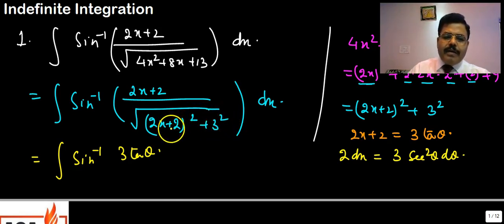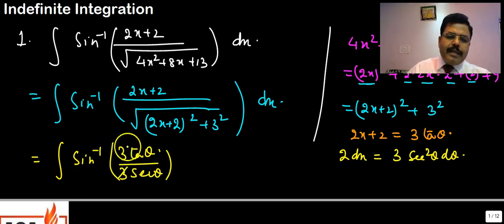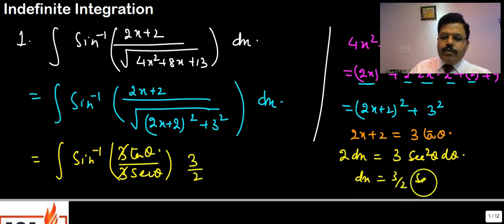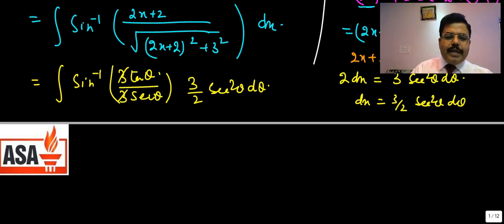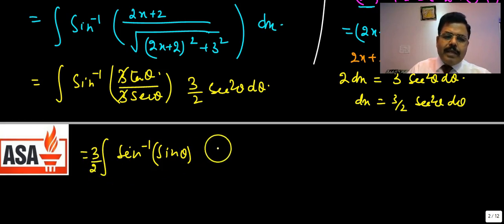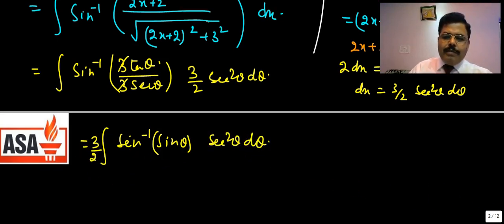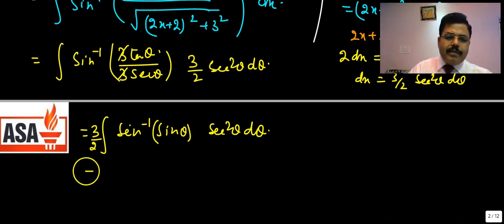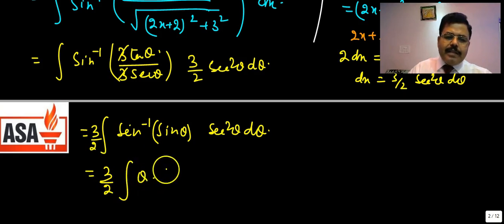With 2x+2 = 3tanθ, dx = (3/2)sec²θ dθ. Now tan/sec = sinθ, so sin⁻¹(sinθ) = θ. The integral becomes (3/2)·∫θ·sec²θ dθ. We can now apply integration by parts: θ is the first function and sec²θ dθ is the second. Integrating by parts: first function as-is times integral of second, minus integral of (derivative of first times integral of second). This gives (3/2)[θ·tanθ − ∫tanθ dθ] = (3/2)[θ·tanθ + log|cosθ|] + C, or equivalently using log|secθ|.